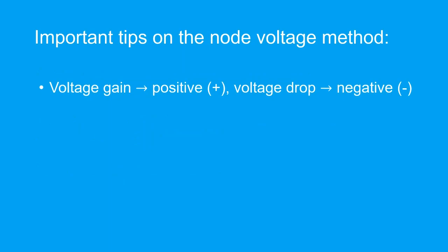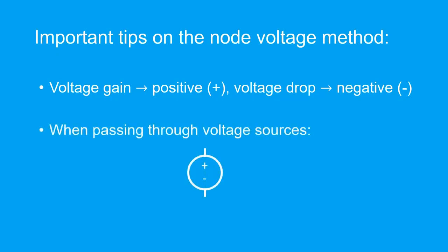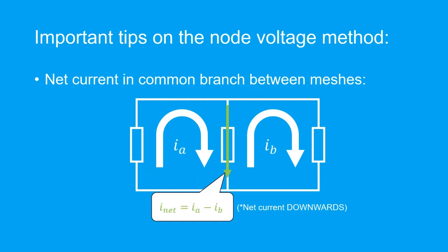Recall the sign convention: the voltage gain is assigned as positive, and the voltage drop is assigned as negative. When passing through voltage sources, check the orientation of its terminals. Going from negative to positive is a voltage gain, whereas going from positive to negative terminal is a voltage drop. The net current of the common branch between two adjacent meshes is given by the difference of the individual mesh currents.